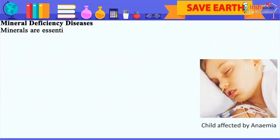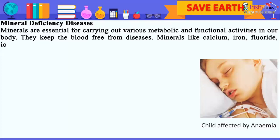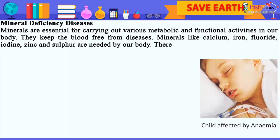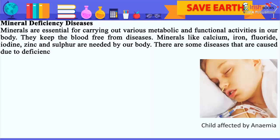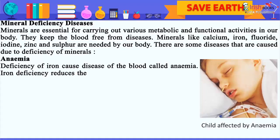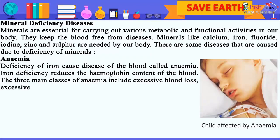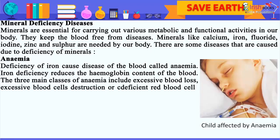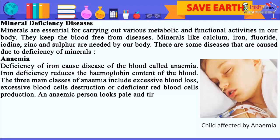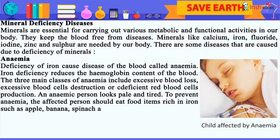Mineral deficiency diseases: Minerals are essential for carrying out various metabolic and functional activities in our body. They keep the blood free from diseases. Minerals like calcium, iron, fluoride, iodine, zinc and sulfur are needed by our body. Anemia: Deficiency of iron causes a disease of the blood called anemia. Iron deficiency reduces the hemoglobin content of the blood. The three main classes of anemia include excessive blood loss, excessive blood cell destruction, or deficient red blood cell production. An anemic person looks pale and tired. To prevent anemia, the affected person should eat food items rich in iron, such as apple, banana, spinach and meat.